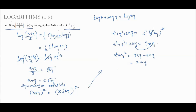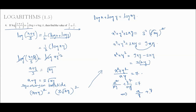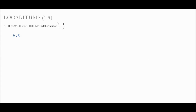Dividing both sides by xy: (x squared plus y squared) divided by xy equals 7. Splitting: x squared over xy plus y squared over xy equals 7, which simplifies to x/y plus y/x equals 7. Hence proved.